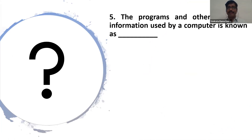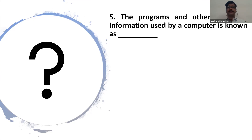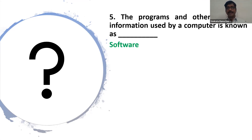Question five: The programs and other operating information used by a computer, or simply a set of programs, is known as what? If you are not typing the correct answer that means you have missed session one and need to go through it again. The answer is software.